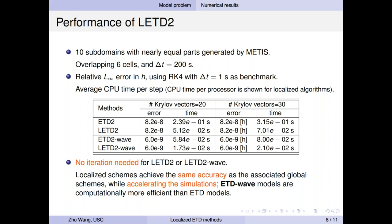So in this table, we show the second column and third column the results when number of Krylov vectors is 20 and 30. You can see there is no big difference. And we also observe there is no iteration needed for both localized algorithms. And it's observed localized schemes can achieve the same accuracy as associated global schemes while accelerating the simulations. And in particular, the second approach is always more efficient and accurate than the first approach.